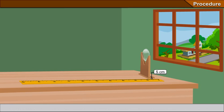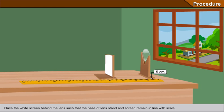Place the white screen behind the lens such that the base of lens stand and screen remain in line with scale.